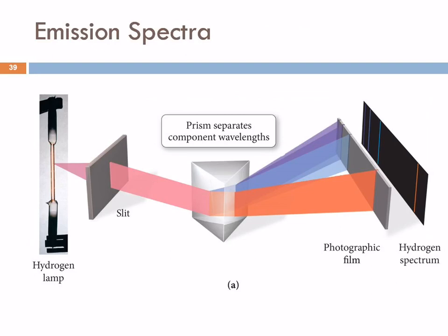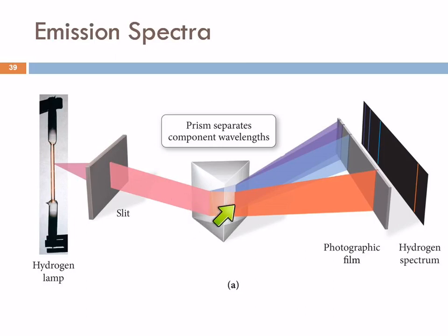The colors we see in flame tests are a result of the emission spectrum. Here's the hydrogen lamp — it gives off a pinkish light. If we pass that through a slit to select a narrow band, and then through a prism, if this were light from the sun we'd expect a rainbow. But we don't see that — we see only four lines. The wavelengths of light emitted by excited hydrogen atoms have specific energies.